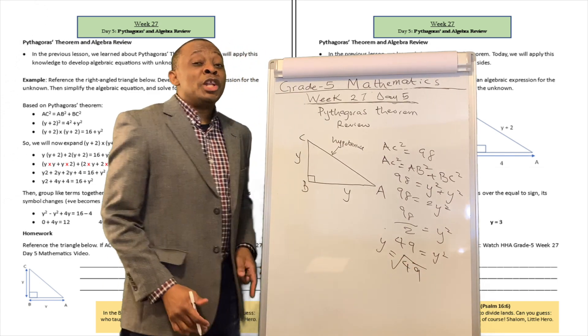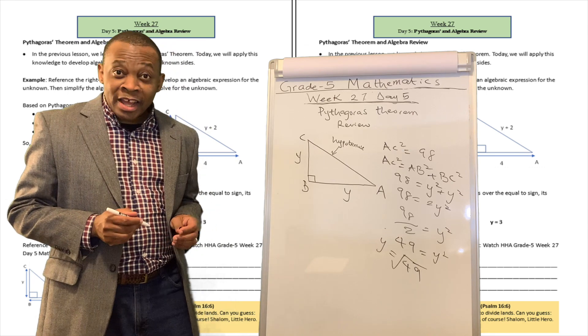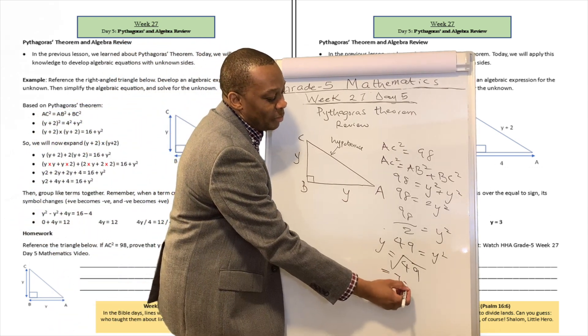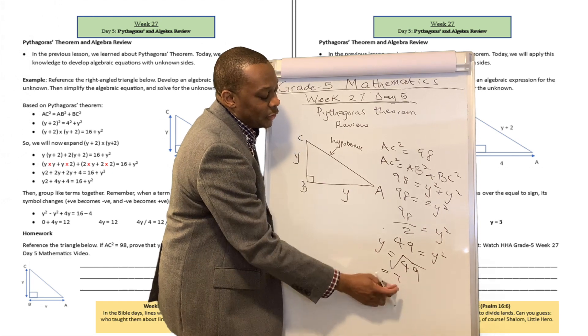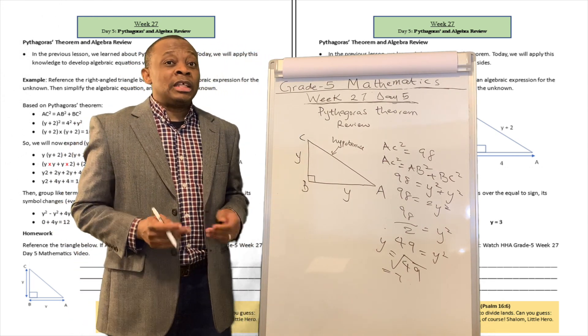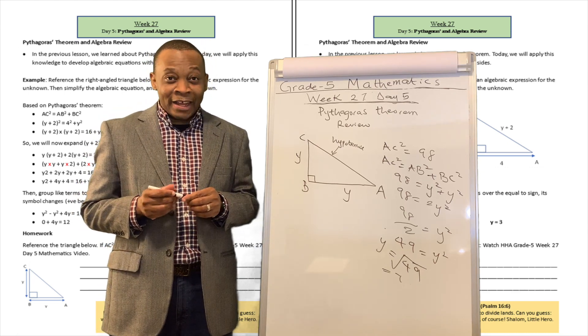So which number can you multiply by itself to give you 49? That's going to be 7 multiplied by 7. So the square root is equivalent to 7. If you remember your times table very well, 7 times 7 is equivalent to 49.